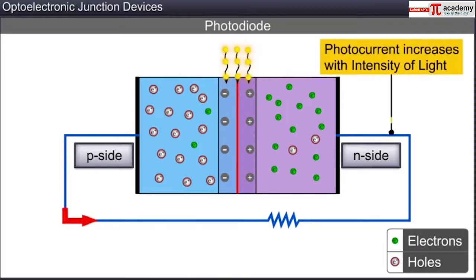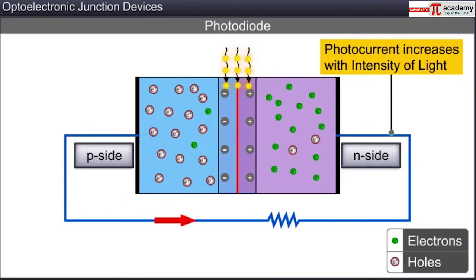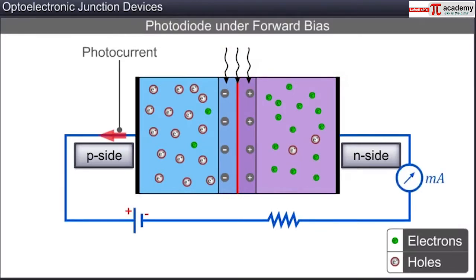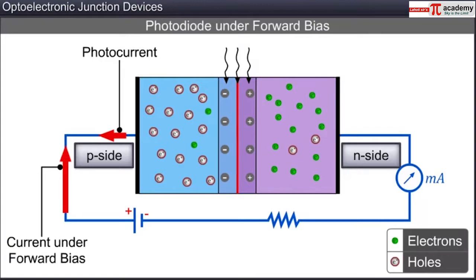The magnitude of the photocurrent increases with an increase in the intensity of the incident light. However, this change is too small to be measured in the absence of any external bias. The magnitude of the photocurrent is too small compared to the large current that flows through the diode under forward bias. Thus, the change in photocurrent with change in the intensity of light is very difficult to measure when a diode is operated under forward bias.